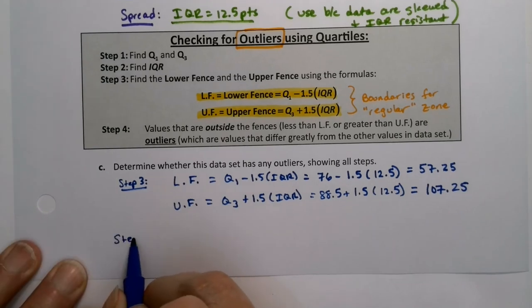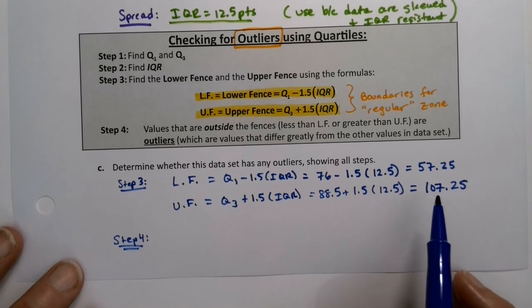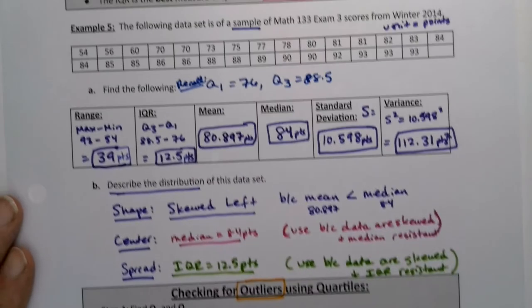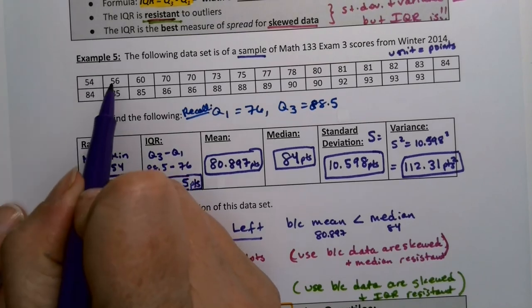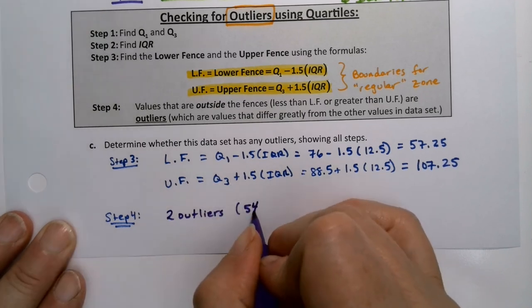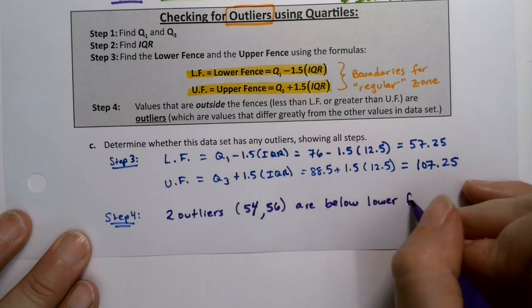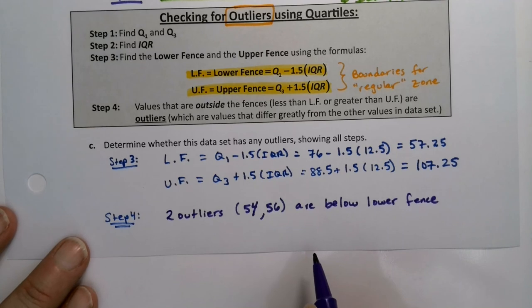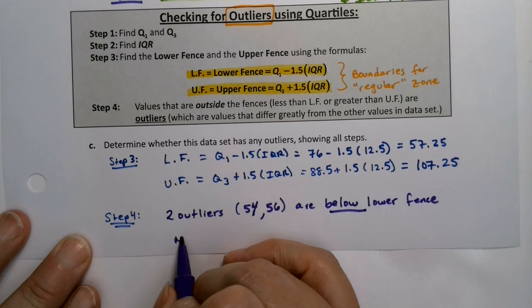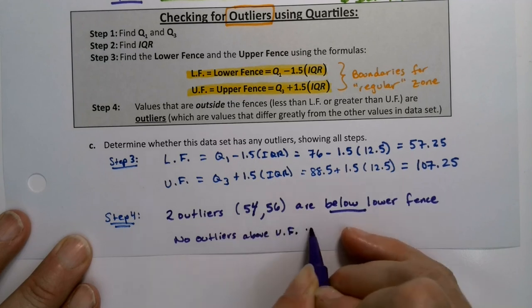Now step four, you look at your data set. Anything that's below 57 or above 107 would be an outlier. So we go back up to our data and we see that we have two outliers right there. 54 and 56 are both below that lower fence. So we have two outliers, at 54 and 56, below the lower fence. There's no outliers above the upper fence.